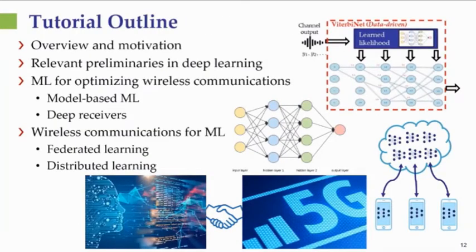We began already with an overview of our goals and main topics. The next part will focus on relevant background in deep learning, which is needed for the rest of the tutorial. We'll then split the remaining of the tutorial into two parts, one that is focused on using machine learning to optimize wireless networks, and one that is focused on using wireless communication to implement distributed and federated learning. So, with that, I'm going to turn over the tutorial to Nir, who's going to begin by giving an introduction to deep learning.